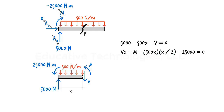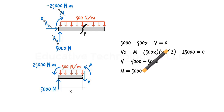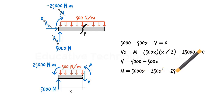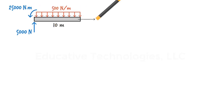Solving these equations for V and M in terms of x, we get V equals 5000 minus 500x, and M equals 5000x minus 250x² minus 25,000. These are our shear and moment equations.